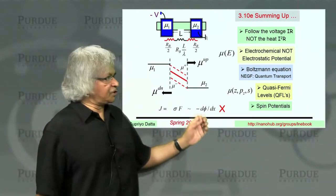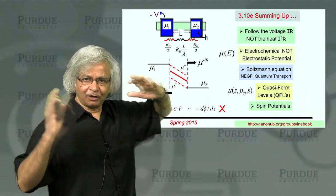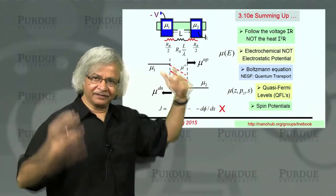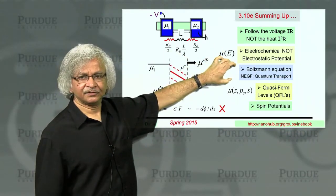So, of course, you always have the Boltzmann equation or NEGF as your quantitative benchmarks. The quasi-Fermi level is a way of thinking that helps you understand or catalog what you're seeing.